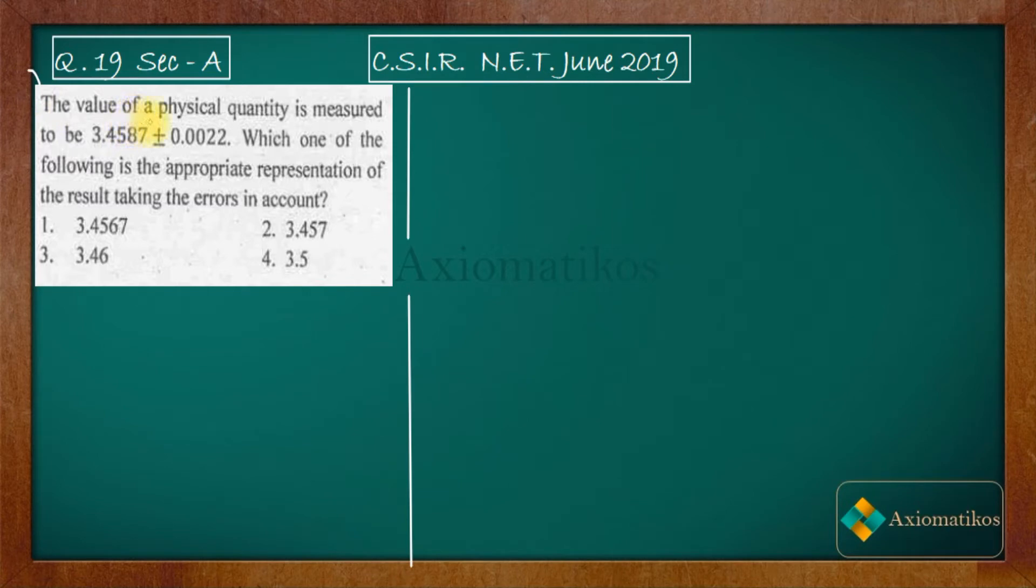The value of a physical quantity is measured to be 3.4587 ± 0.0022. Which one of the following is the appropriate representation of the result taking the errors into account?